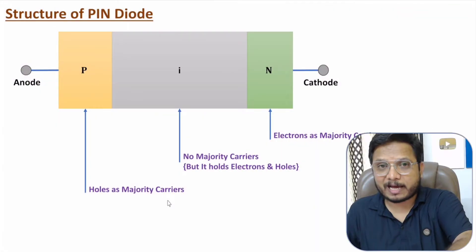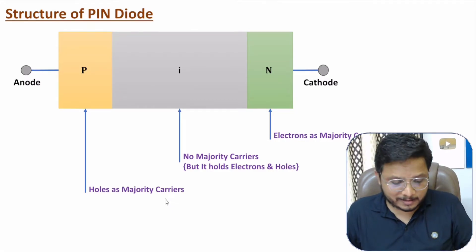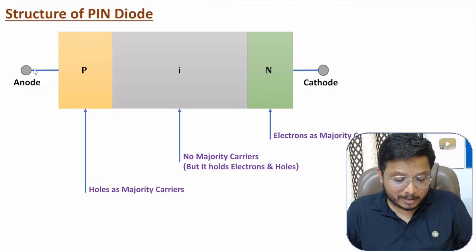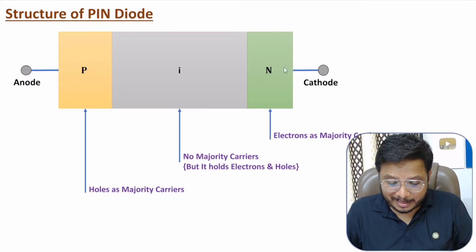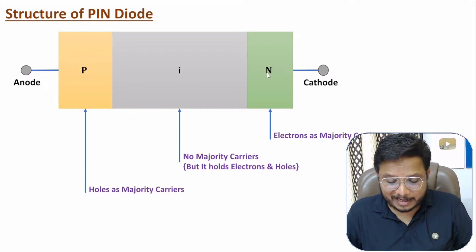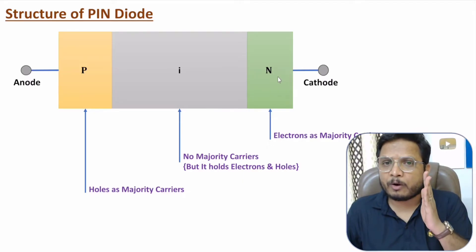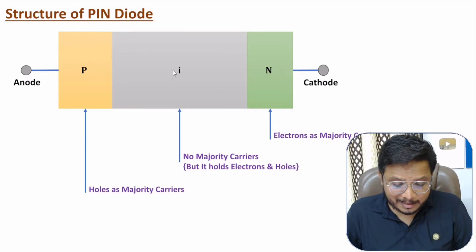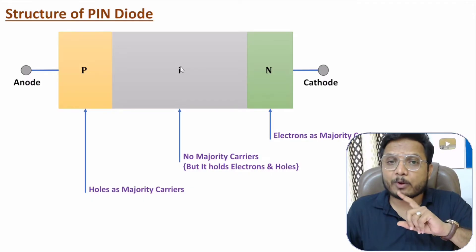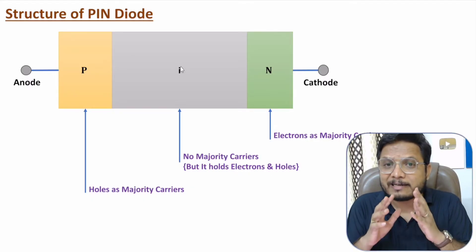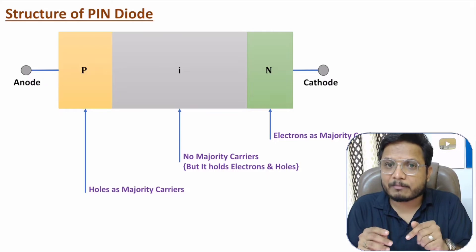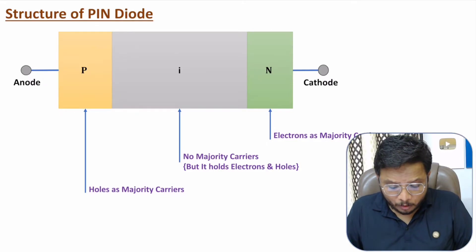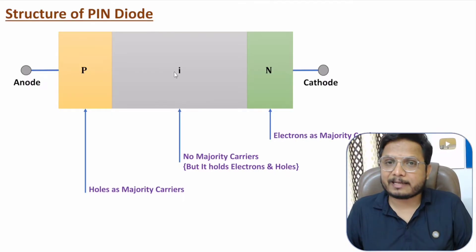Now I'll explain the structure of PIN diode in more detail. It is a two-terminal device — anode and cathode. The anode is connected with the P-type layer, cathode with the N-type layer, and the intrinsic layer is sandwiched in between. The P-type has holes as majority carriers, N-type has electrons as majority carriers, and the intrinsic layer has no majority carriers — it holds both electrons and holes, but neither dominates.